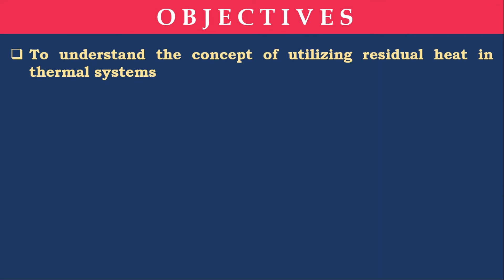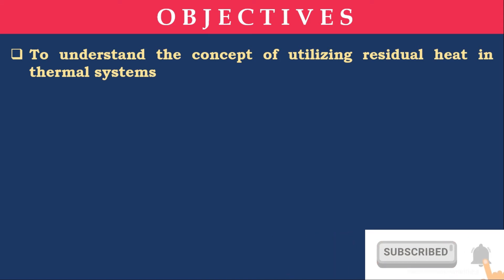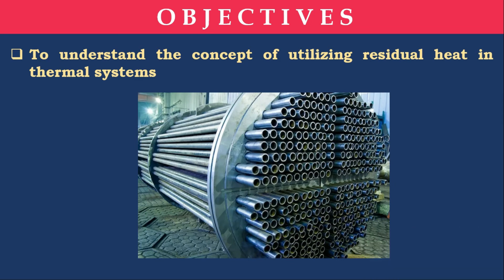Objective 2 is to understand the concept of utilizing residual heat in a thermal system — which means how to use waste heat. For example, the exhaust of a boiler will be around 190 degrees Celsius, whereas atmospheric temperature is 30 degrees Celsius. So we have a 160-degree Celsius difference that can be used for other purposes, like process industries. That will be studied in Unit 4 — how to find out the additional heat loss and where we can use that heat.